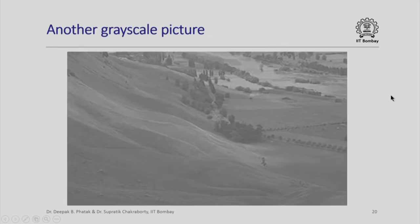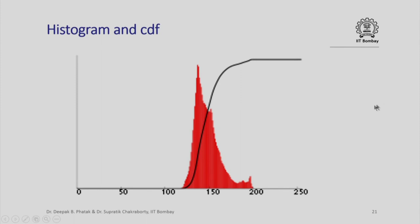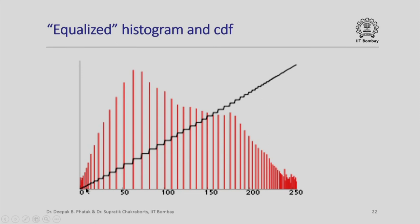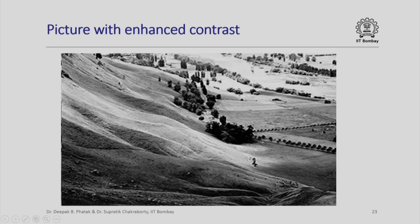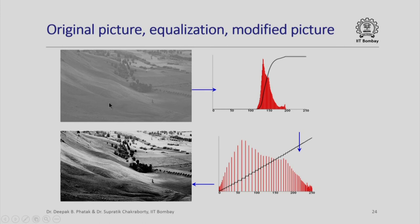Here is another interesting example — a grayscale scene where the contrast is also not very good. If we actually plot the histogram and the cumulative distribution function, the red color is the histogram. Notice that all pixel values are concentrated in a small range somewhere between 100 and 200. If we apply histogram equalization, the CDF will be stretched and the histogram will be spread all the way from 0 to 250. When we transform individual pixels as per the equalization formula, we get a picture with much greater contrast.